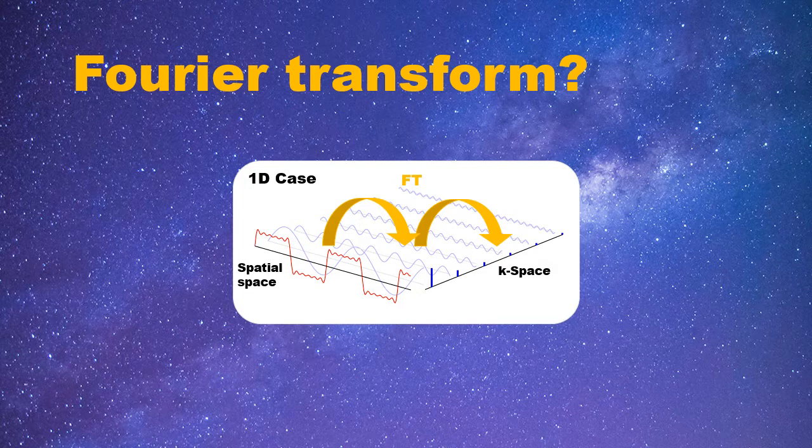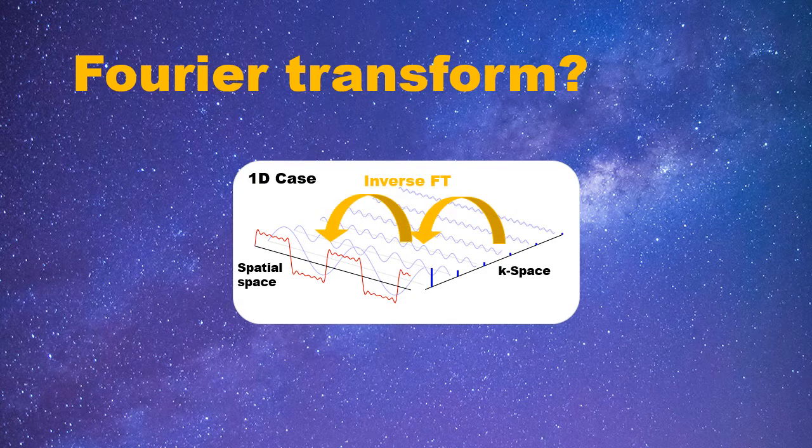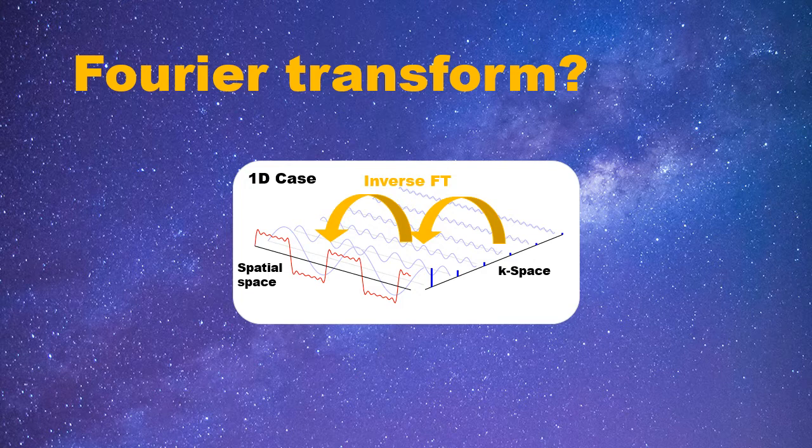Reversely, by taking inverse Fourier transform, the k-space signal will be first converted back to several trigonometric waves. Then, after summing these trigonometric waves up, the original square wave is recovered.